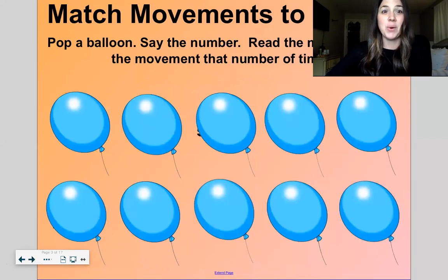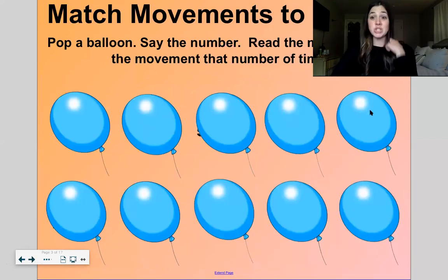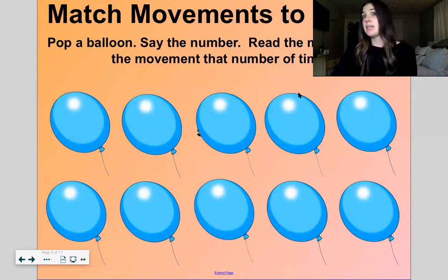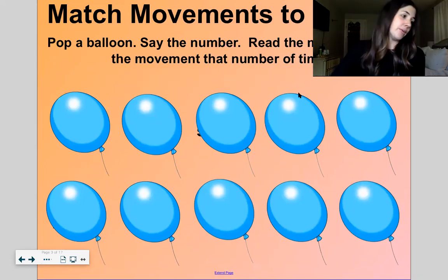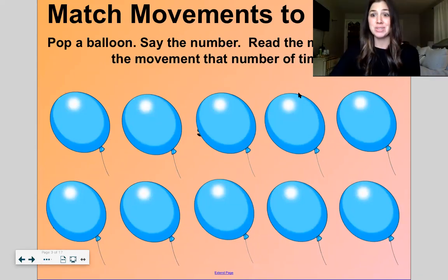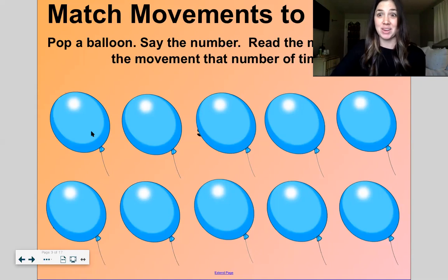We're going to play this game called match movements to counts. I'm going to pop a balloon and we're just going to do this top row here. We'll look at the number and then we're going to read the movement. So it might say something like five claps, and so we'll have to count that many claps. All right, here we go.